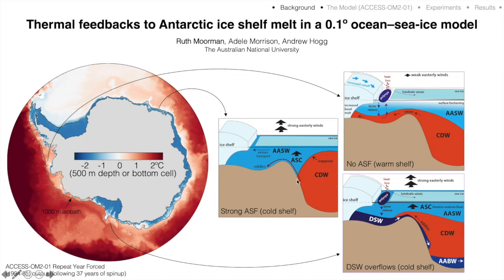These unresolved shelf margin processes include the Antarctic slope front, which maintains a strong lateral gradient in temperature and salinity between the shelf waters and the open ocean waters around Antarctica. They also include the formation and export of dense shelf waters, which is important for global overturning and involves exchange of open ocean and shelf waters at the continental shelf margin. Another example is eddy-driven transport of warm open ocean circumpolar deep waters onto the shelf.